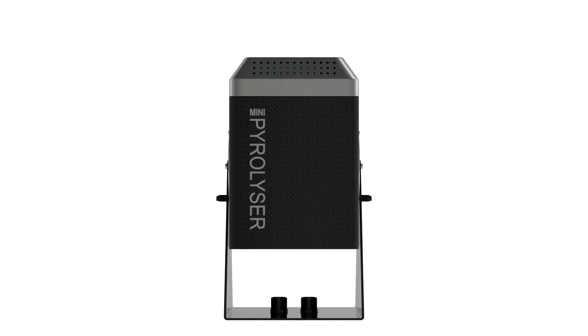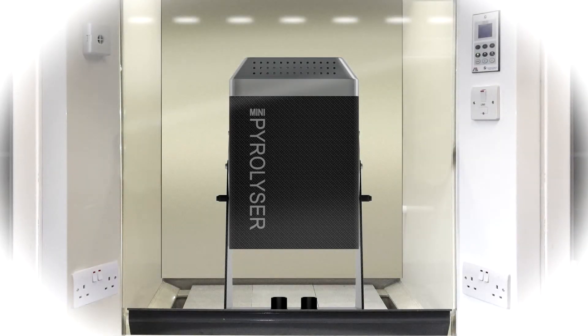The Pyrolyser mini is a compact two-work tube system designed for use in fume cupboards, glove boxes, mobile laboratories and conventional laboratories.